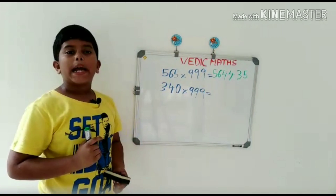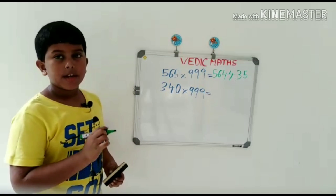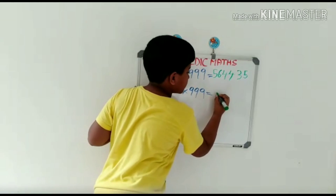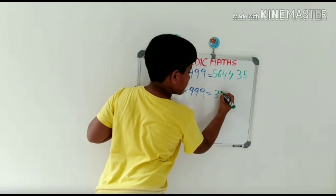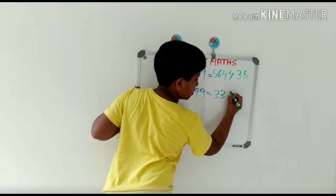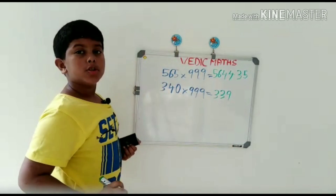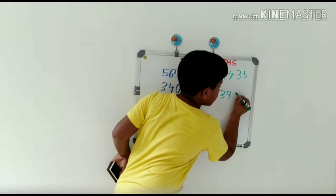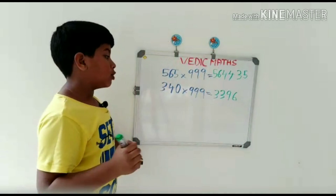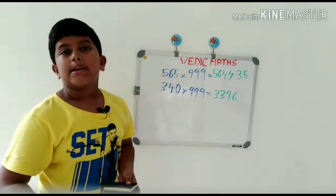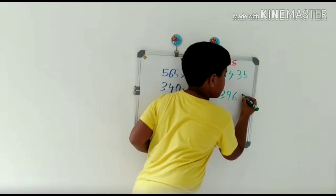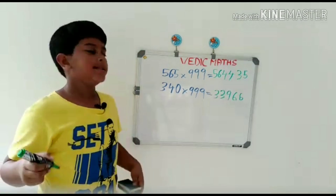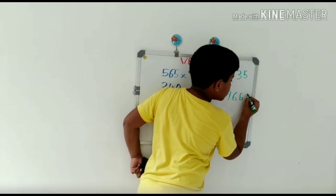340 multiplied by 999. First, we should write the number 1 less than 340, that is 339. And what number should be added to 3 to get 9? That's 6. What number added to 3 to get 9? That's 6. What number added to 9 to get 9? That's 0. Here's the answer: 339660.